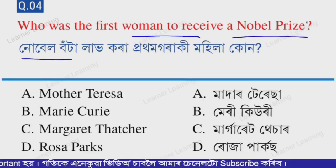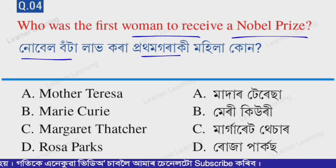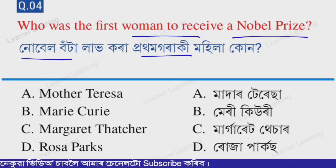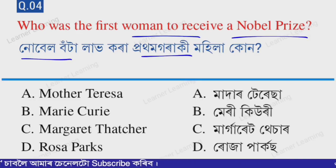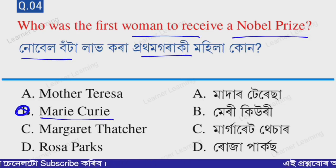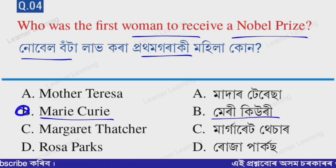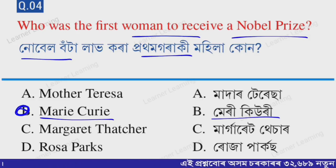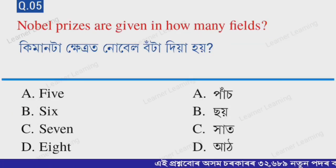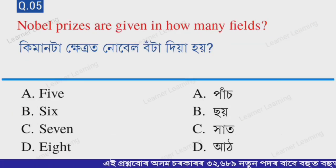Next question: Who was the first woman to receive a Nobel Prize? The correct option is option B — Marie Curie. Marie Curie was the first woman to receive a Nobel Prize.